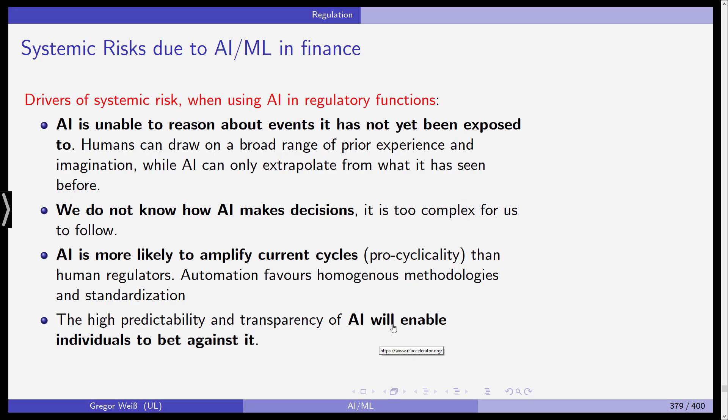AI and ML in the financial sector might be a future driver of systemic risk. First, AI is unable to reason about events it has not yet been exposed to. An important aspect of ML methods is their ability to generalize to new data, but humans can draw on a broad range of prior experience and imagination — AI cannot. It can only extrapolate from what it has seen before.